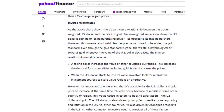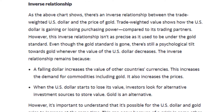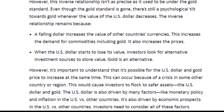It's the inverse relationship. The article says there's an inverse relationship between the trade-weighted U.S. dollar and the price of gold. Trade-weighted value shows how the U.S. dollar is gaining or losing purchasing power compared to its trading partners. However, this inverse relationship isn't as precise as it used to be under the gold standard. Even though the gold standard is gone, there's still a psychological tilt towards gold whenever the value of the U.S. dollar decreases. A falling dollar increases the value of other countries' currencies, which increases the demand for commodities, including gold. Yes, gold is a commodity, and it also increases prices.